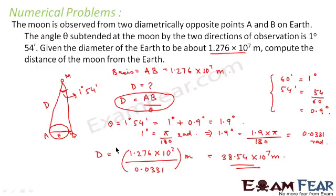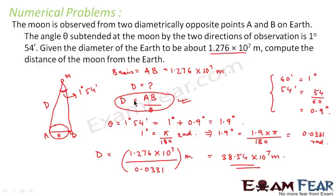Whenever we need to measure the distance of a very far-off object, we use this relation derived using the parallax method. Before using the formula, always remember that the units must be in SI — that is, θ must be converted to radians before the formula is applied.